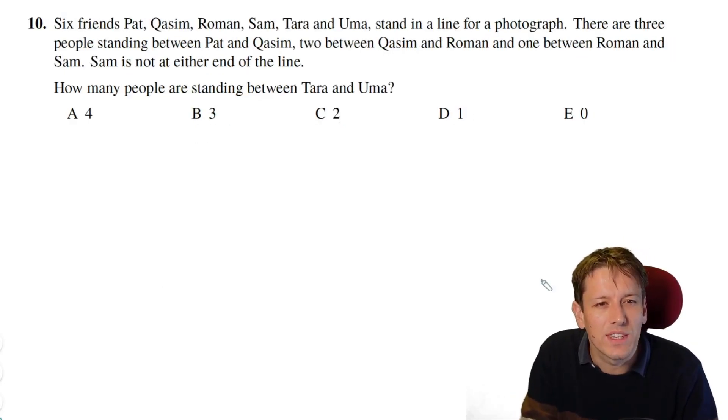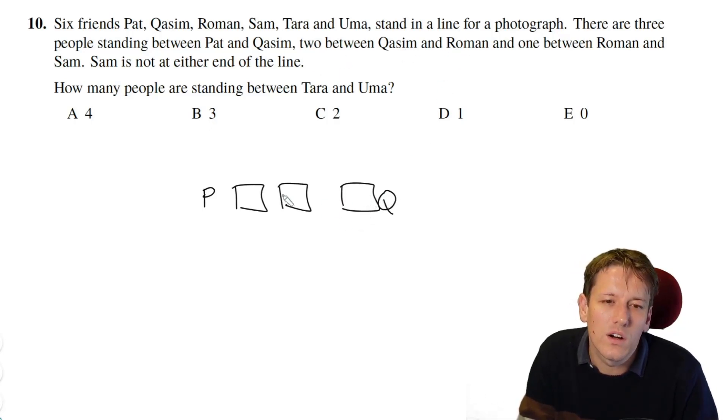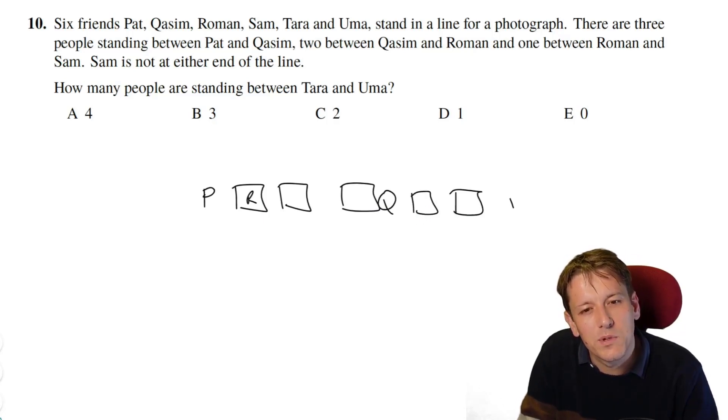Right, we've got a bit of a logic question here, we've got these six friends, Pat Kazim, Raymond, Sam, Tara and Uma, standing in line for a photograph, I'll just call them P, Q, R, S, T and U from now on. There are three people standing between P and Q, so let's just draw that, so I've got P and Q, and then let's just say there are three gaps, two people between Q and R, so R could certainly be here, could R be the other side? Well, if there was two people between them on the other side, there would now be eight people at least in this line, there's only six, so it must be actually that R is over on this side, and then it says there's one person between R and S, and Sam is not at either end of the line, or S is not at either end of the line, so if there's one person between R and S, well S could be here, or S could be here, but if S was here, then S would be at the end of the line, because that would be six people in total now, so it must actually be that S is here.